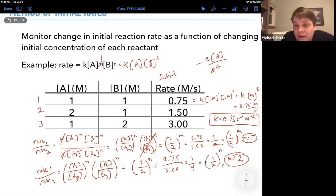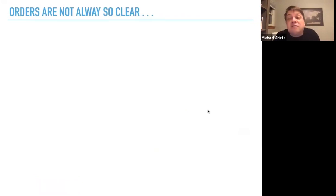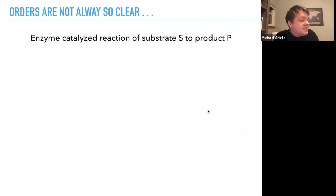So one thing to bear in mind is that frequently the orders like this, but they're not always so clear. In certain circumstances, you can have rate laws that are a little more complicated. For example, an enzyme catalyzed reaction of substrate S to product P.